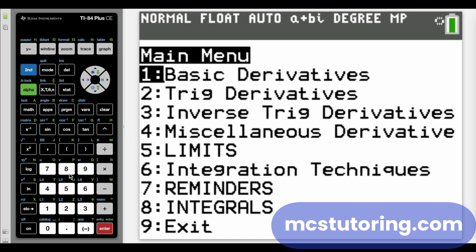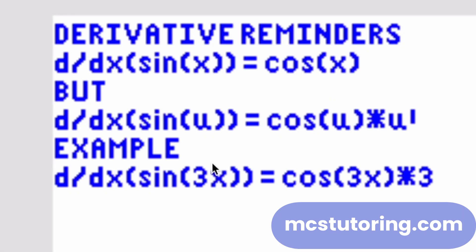Now let's go over the reminders. So everybody's like, oh, I get it. Derivative sine of X is cosine of X. Ha ha ha ha. So sine of seven X is cosine of seven X. No.